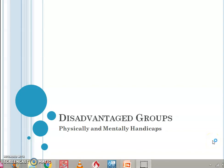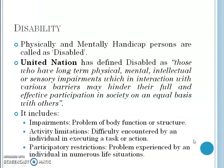Good morning students. In today's class we'll discuss the next disadvantaged group, which is physically and mentally handicapped persons. We first need to understand what disability is, as physically and mentally handicapped people are disabled for certain types of activities. The United Nations has defined disabled persons as those who have long-term physical, mental, intellectual or sensory impairments — impairments meaning the people are not able to perform certain kinds of activities which, in interaction with various barriers, may hinder their full and effective participation in society on an equal basis with others.